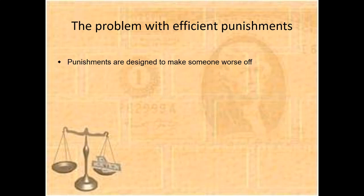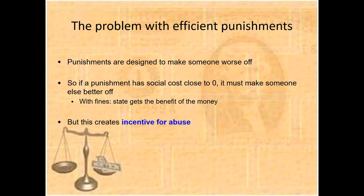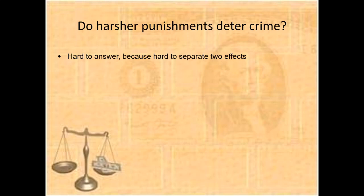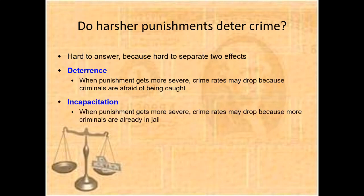The problem with efficient punishment: punishments are designed to make someone worse off. If punishment has zero social cost, it must make someone else better off — with fines, the state gets the money. But this creates an incentive for abuse — the state benefits from convicting people — seen in drug cases and forfeiture, and traffic cameras with manipulated yellow lights.